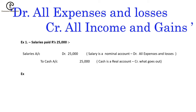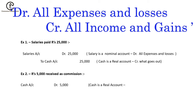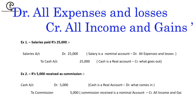Another example: rupees 5,000 received as commission. Commission is income and cash is coming in, so cash account will be debited by 5,000 — real account: debit what comes in. Commission is income, so commission received account will be credited by 5,000 — nominal account: credit all income and gains.